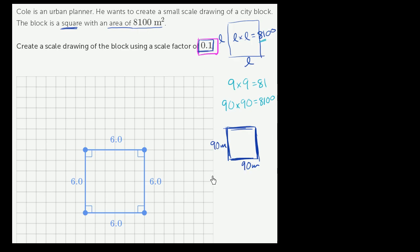So 90 times 0.1, well that's just going to be 9. This right over here is a tenth. A tenth of 90 meters is going to be 9 meters.